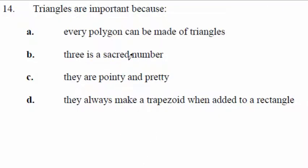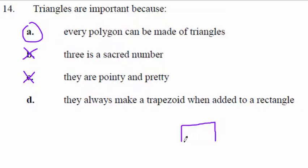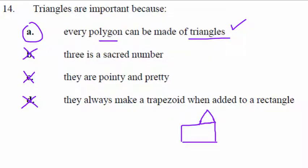Triangles are important because every polygon can be made of triangles. Three is a sacred number? No. They are pointy and pretty? No. They always make a trapezoid when added to a rectangle? That doesn't even make sense — a triangle stuck on a rectangle is not a trapezoid. All the other answers are dumb. A triangle is a three-sided figure with straight sides and three corners.